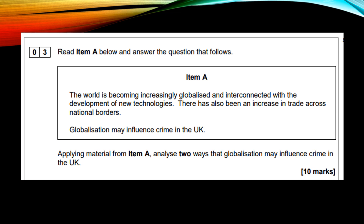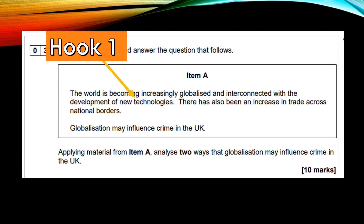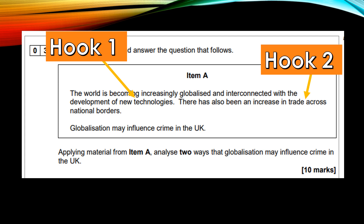The question is asking you for two ways, and that's what you're looking for in the item. The first way in which globalisation might influence crime is the development of new technologies. The second hook is an increase in trade across national borders. You really need to read the question carefully as it is asking how these two processes have influenced crime in the UK — and this is where many students lost marks because they did not show how it impacted crime rates in the UK.